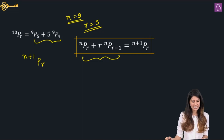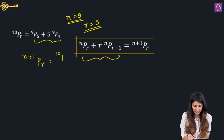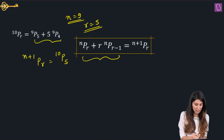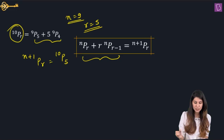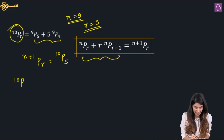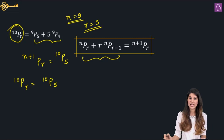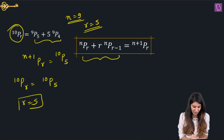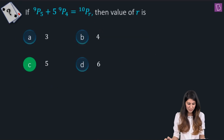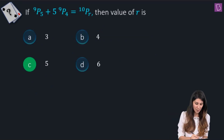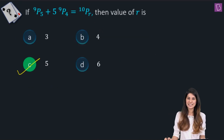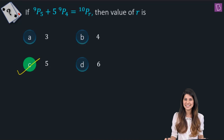Where N is 9, this equals 10P5. But the question states this equals 10PR. So 10PR equals 10P5 if and only if R equals 5. The final answer is option C: 5. Easy peasy!